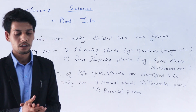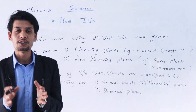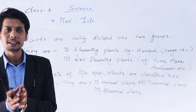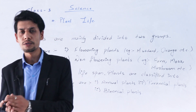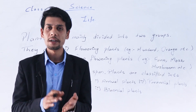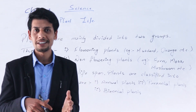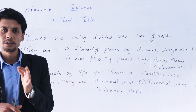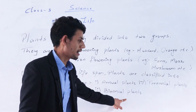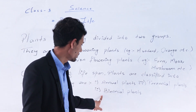Now I am going to discuss about biennial plants. Biennial plants are the plants that grow and die within two years. Within two years they grow, and they can survive only within two years, after which they die.